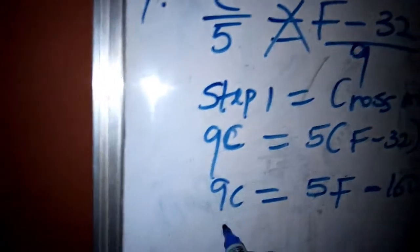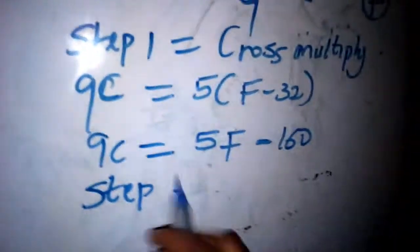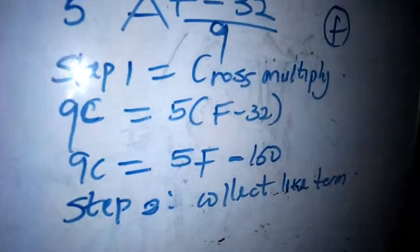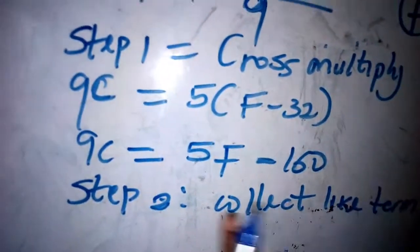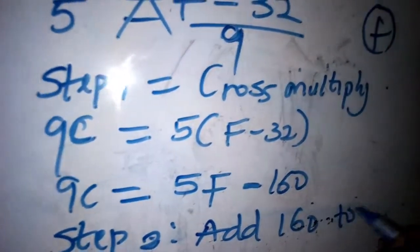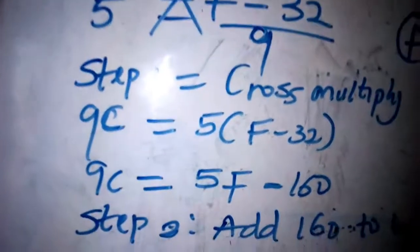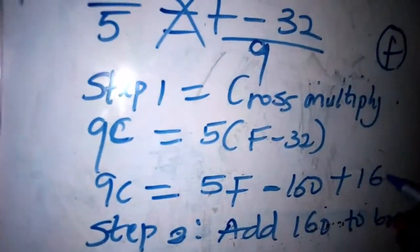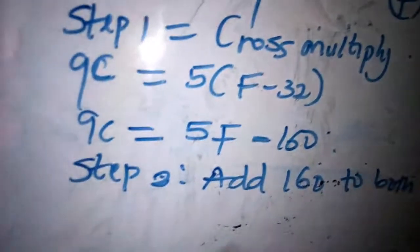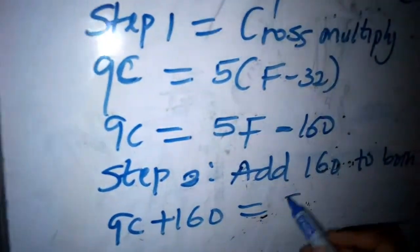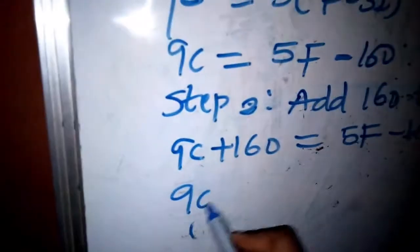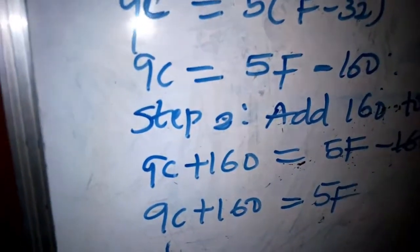Step two: collect like terms. Since 160 is not really a like term here, we add 160 to both sides. Minus 160 plus 160 gives us zero, so 160 is cancelled. We are left with 9C plus 160 equals 5F. Mind you, we want to make F the subject of the formula.